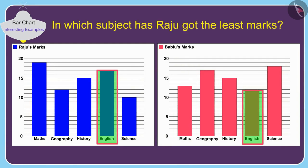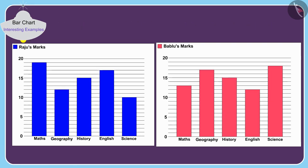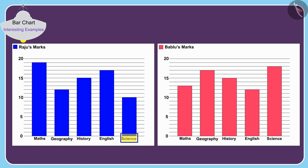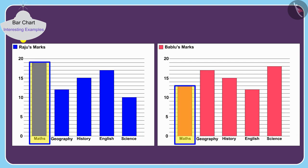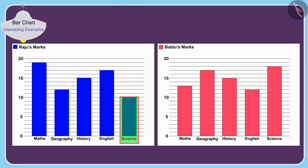The height of the rectangle made in science in Raju's bar chart is the smallest among all of the bars in Raju and Babloo's bar charts. Hence the lowest of all marks — 10 marks — are scored by Raju in science.